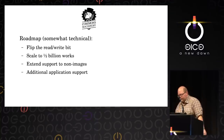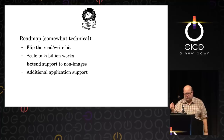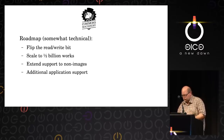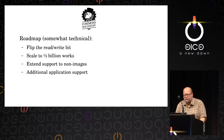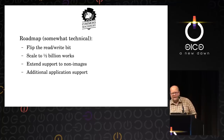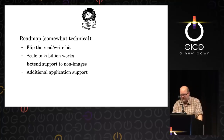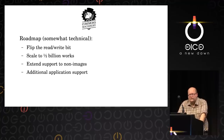Beyond scaling to half a billion works, we want to flip the read-write bit. At the moment, Elogio's API has provisions for editing information, but we haven't enabled that yet — we've just taken information from Wikimedia Commons as a read-only repository. Flipping that bit and making it read-write is what's going to change things. We also need to extend Elogio to support non-images and other kinds of creative works, and implement support for the API directly in applications — making the link back to the application side now that we've solved metadata retention separately.